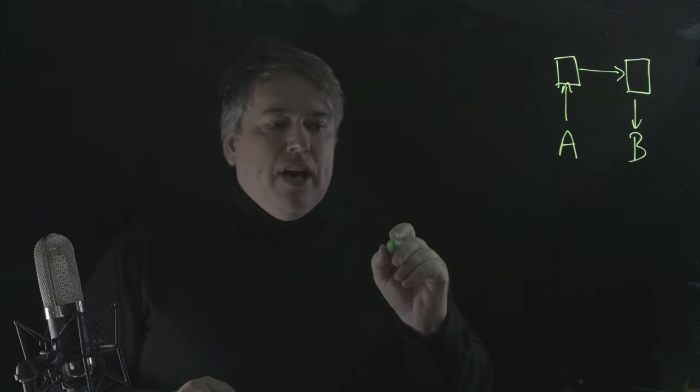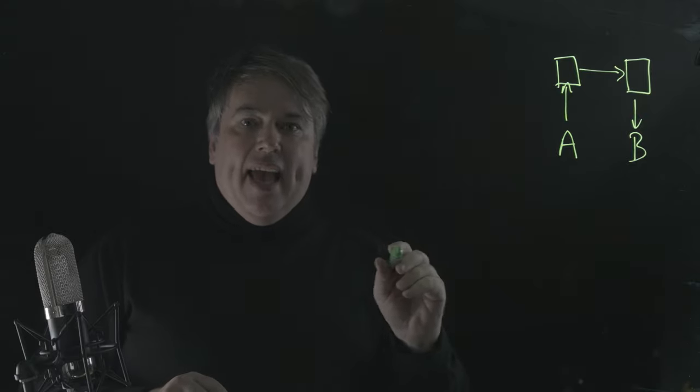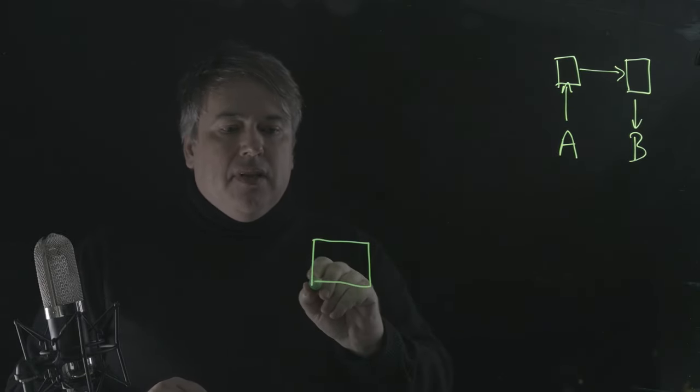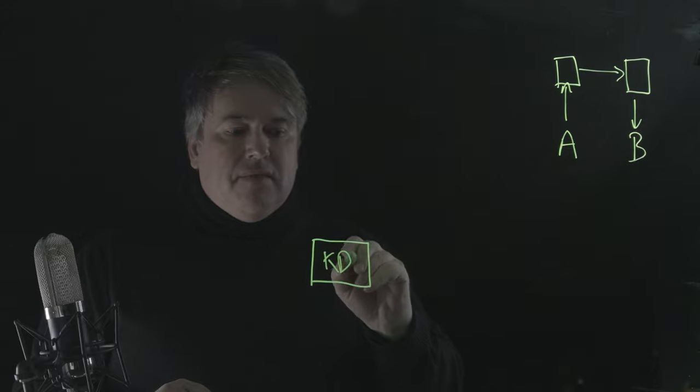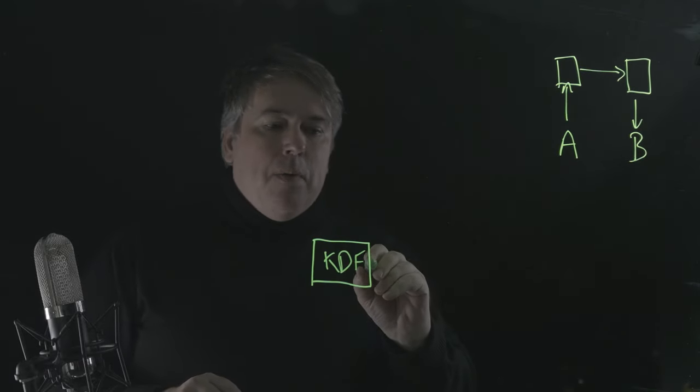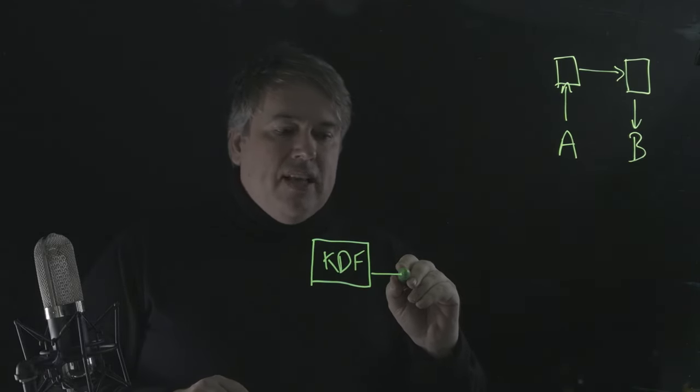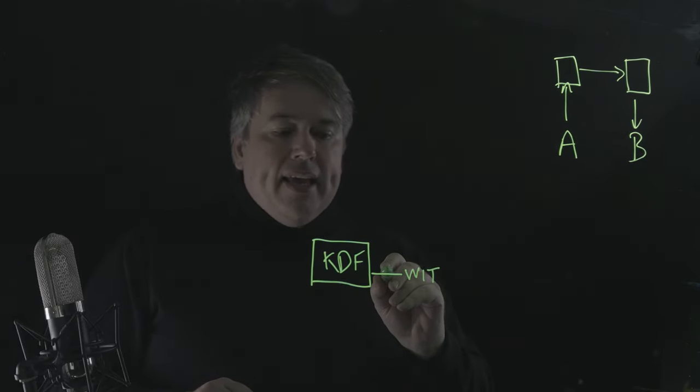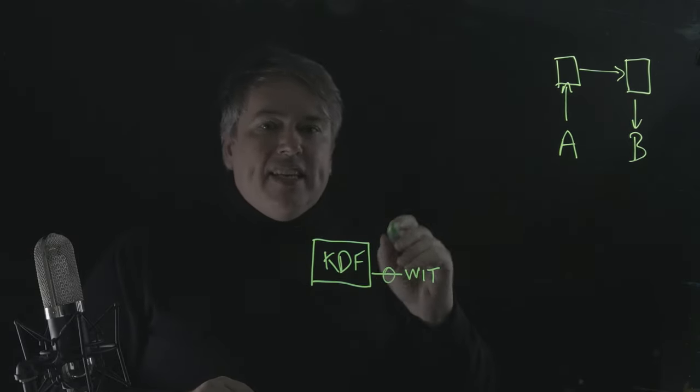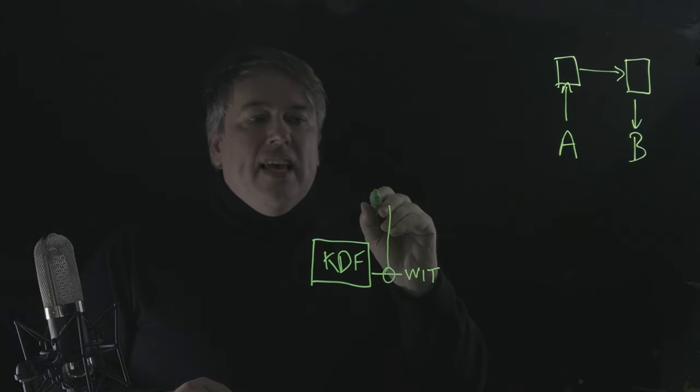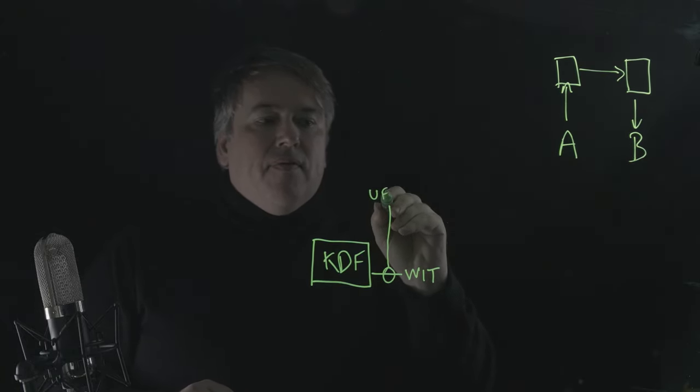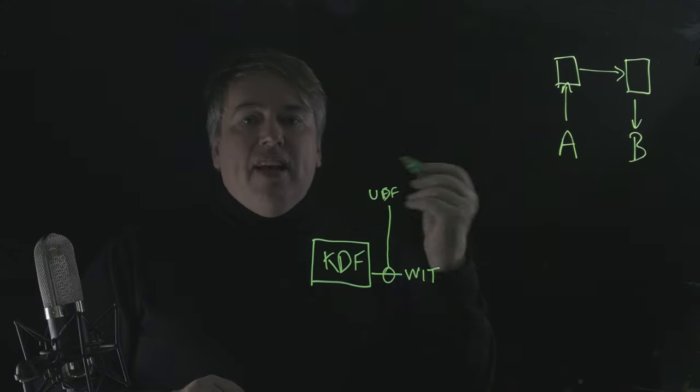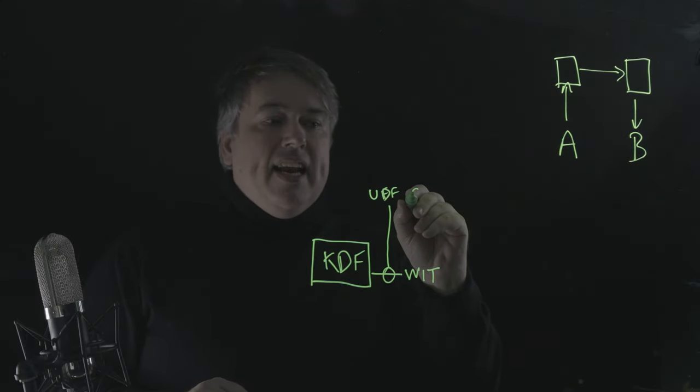So, how do we do that? Well, we use a KDF function again. So, the key exchange is a KDF function, and one of the outputs from this is the witness value. Well, what we do here is that we have an additional mix in here, which is the UDF fingerprint of the signing key.